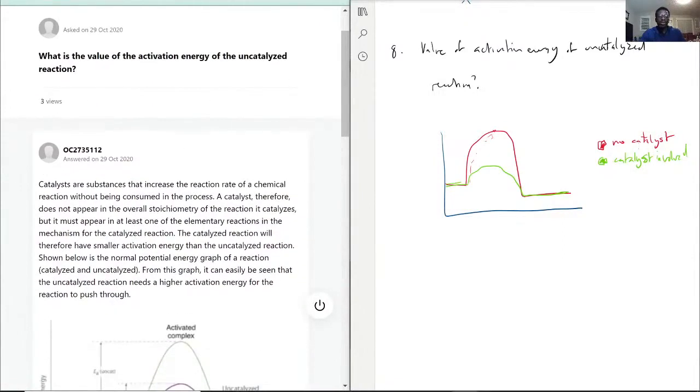So exactly, catalyst is a substance that increases the reaction rate of the reaction without being consumed in the process. That's key, because the catalyst is not actually part of the reaction... well, I phrase that wrong. The catalyst is part of the reaction, but the catalyst stays there. It does not get used up during the reaction.